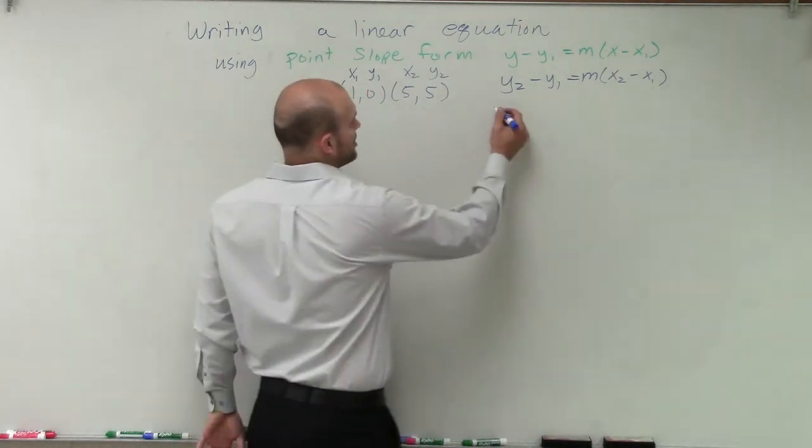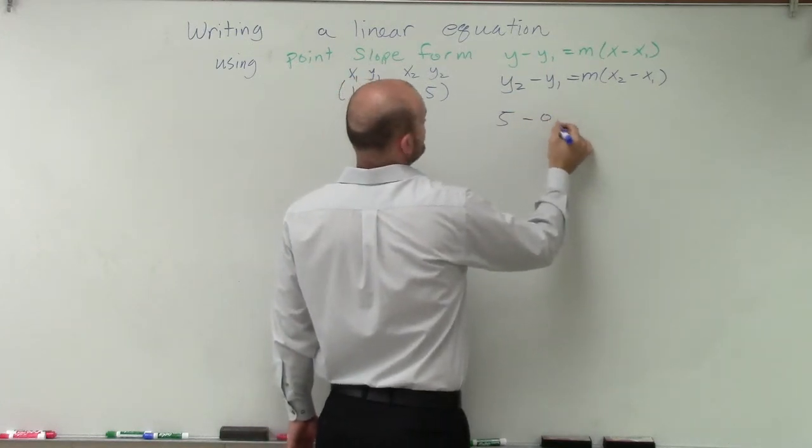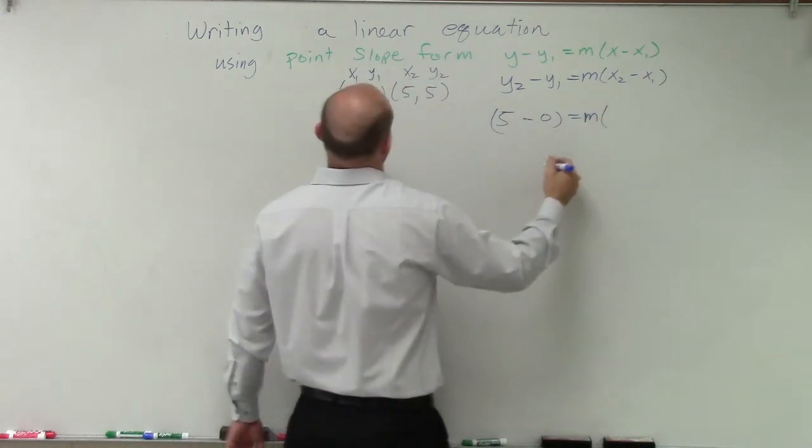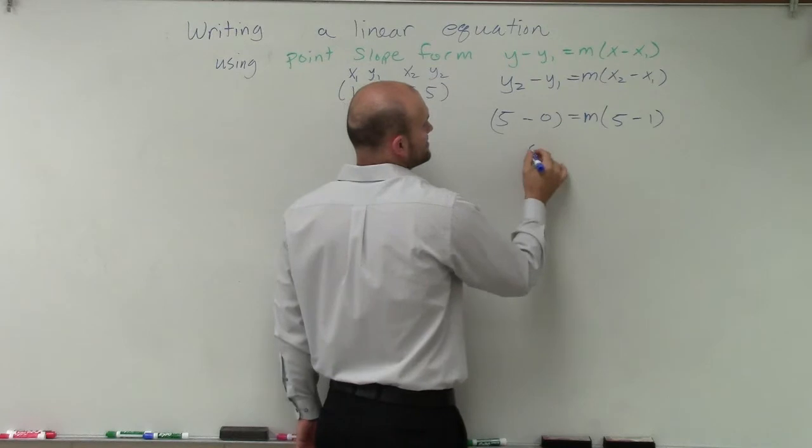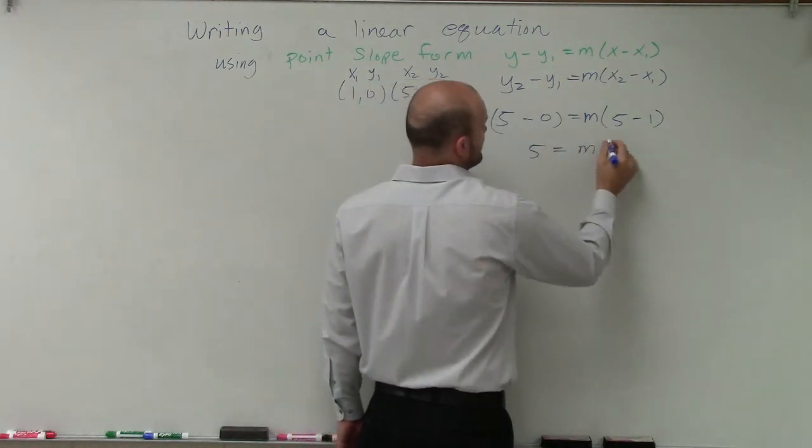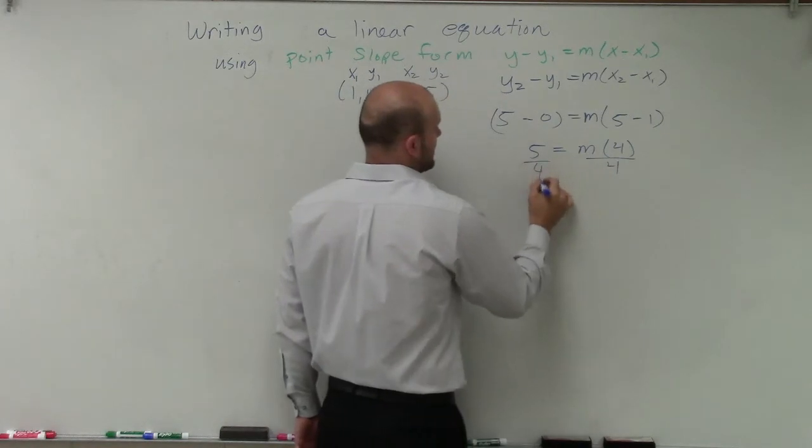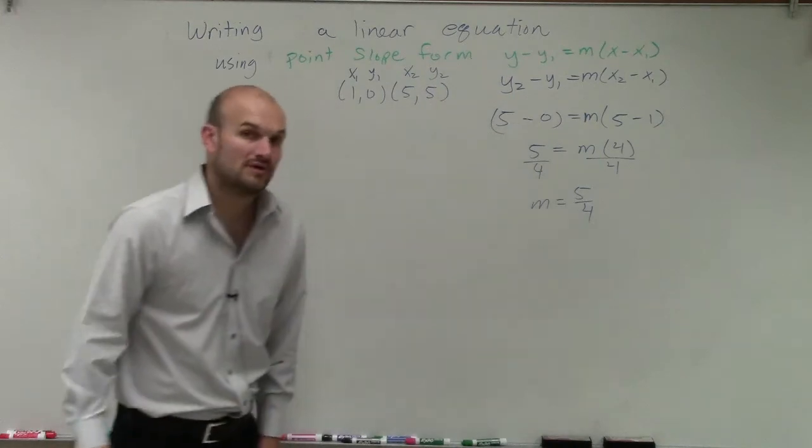But I'm just going to plug them in here. So I'll have 5 minus 0 equals my slope, which I'm trying to figure out, as 5 minus 1. So therefore, this becomes 5 equals m times 4. Now to solve for m, I divide by 4, divide by 4. So therefore, m equals 5 fourths.